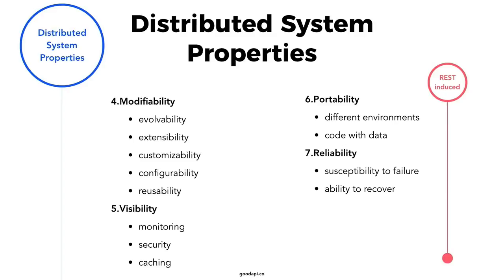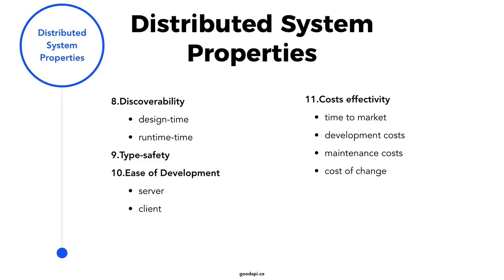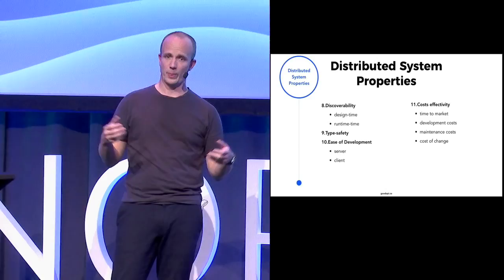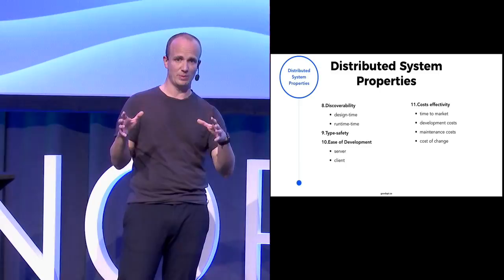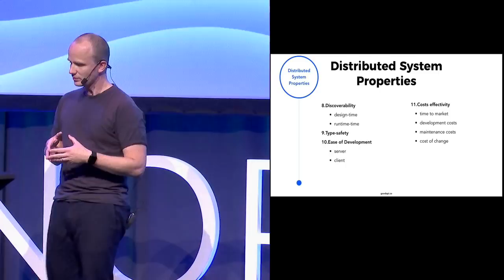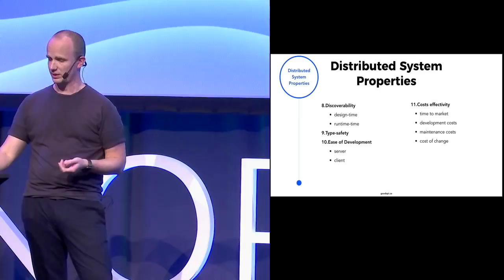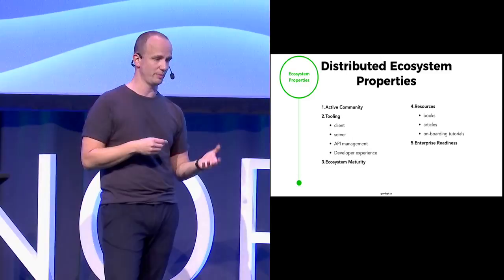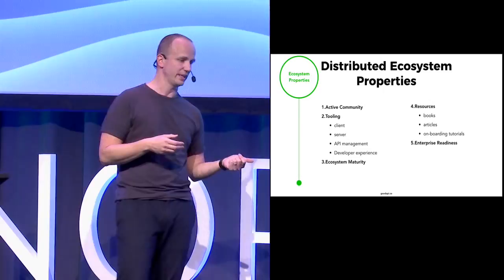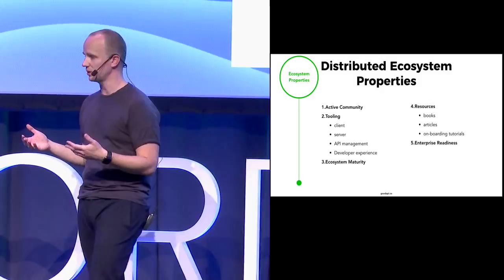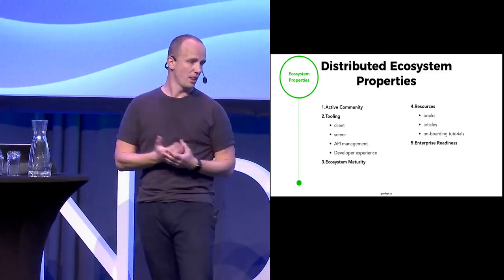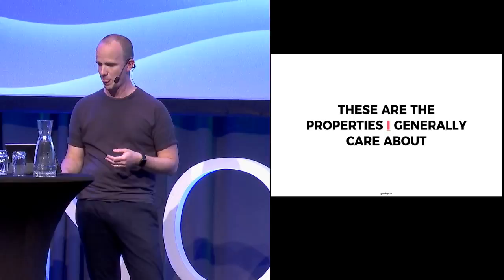There are other properties relevant these days not necessarily covered by REST, like discoverability — how easy it is to discover the actions available in the API, and how you can navigate the API landscape. Type safety, ease of development — some properties you may or may not care about, depending. And of course, cost efficiency. There is an ecosystem around the system you are building — the community activity, tooling quality, maturity of the ecosystem, resources like articles, books, presentations, onboarding, tutorials, and enterprise readiness.